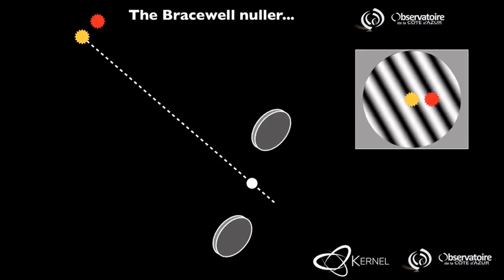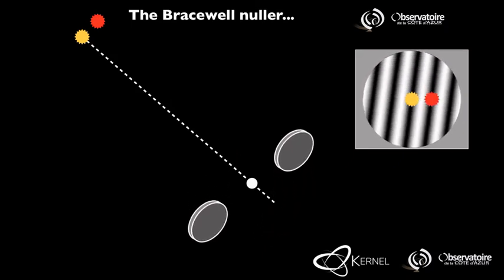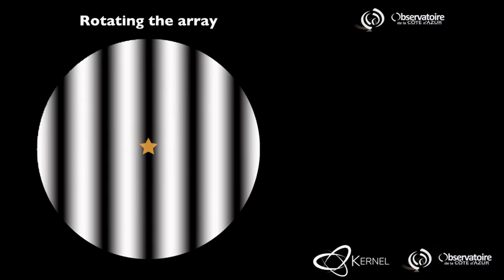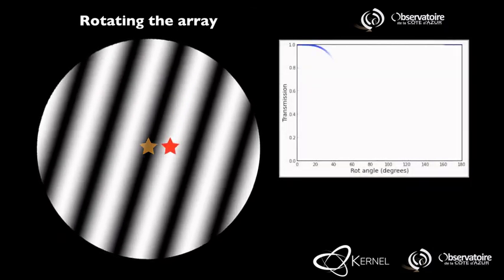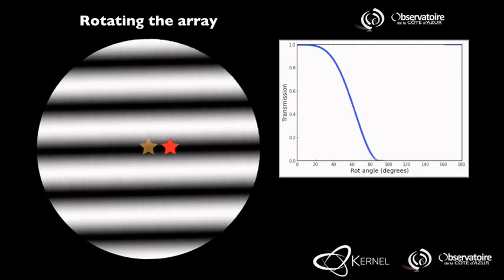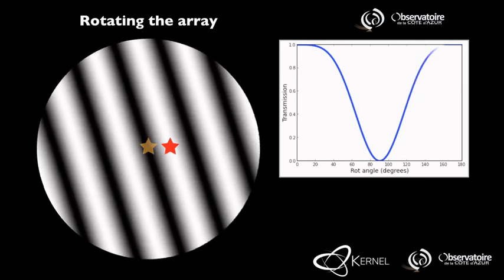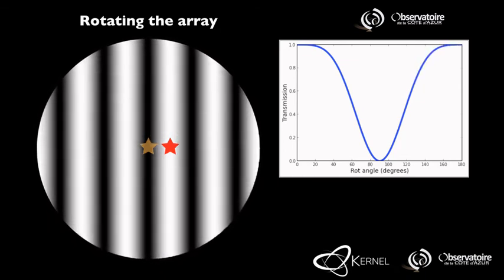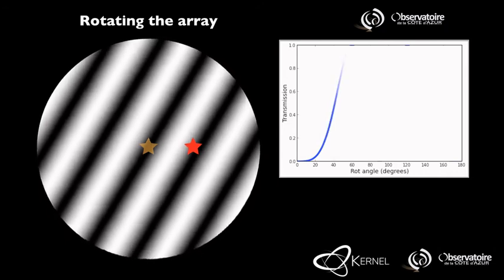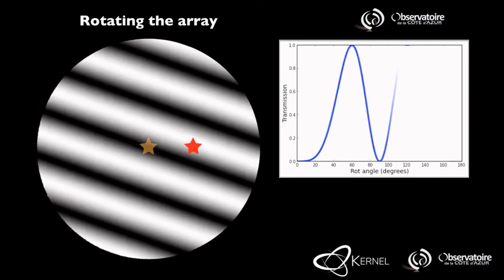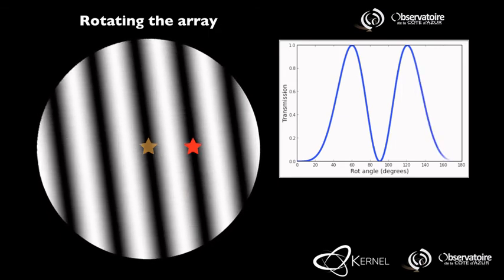By spinning the interferometer, the comb scans the field of view, and except for the on-axis star that remains blocked by the nuller, each region of the field of view is eventually transmitted and the light of a potential companion will find itself coupled into the dark output of the nuller. If the star hosts a companion, one will be able to observe a modulation of the intensity measured in the dark output. And from the number of oscillations and the overall phase of that modulation, one will be able to constrain the position of that companion.